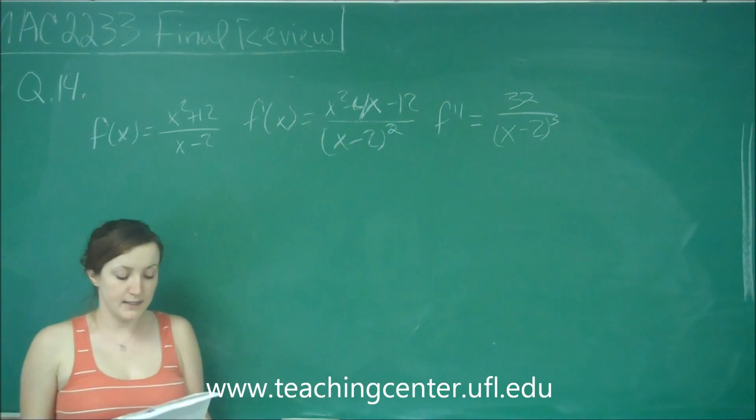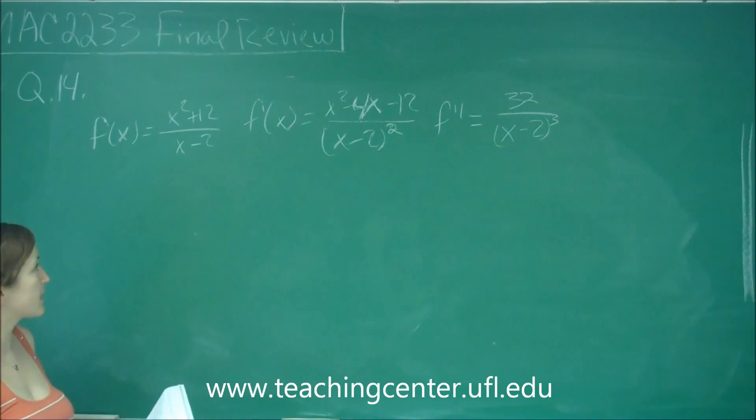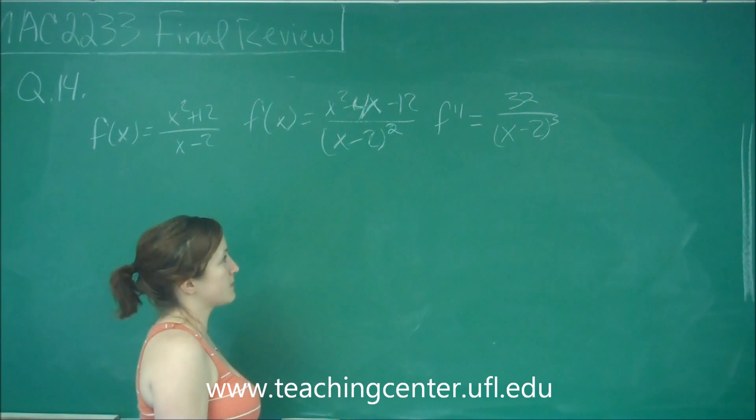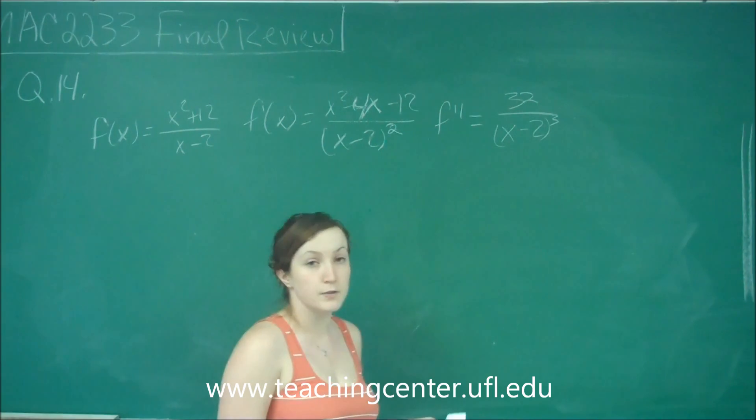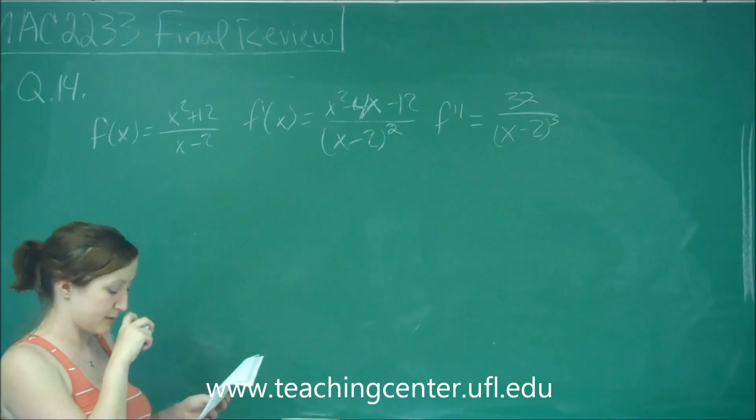This is question number 14. Given all this information: f of x equals x squared plus 12 over x minus 2, f prime of x equals x squared minus 4x minus 12 over x minus 2 squared, and f double prime equals 32 over x minus 2 cubed, which of the following statements is or are true? Be sure to consider domain.